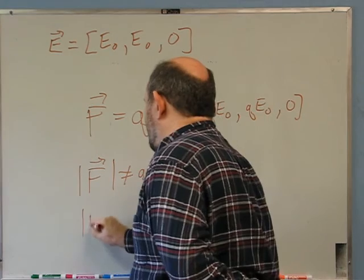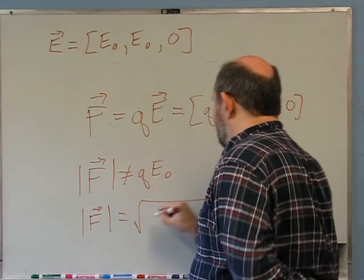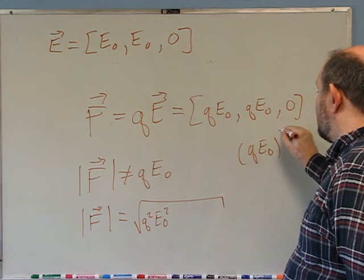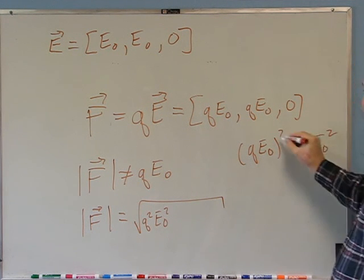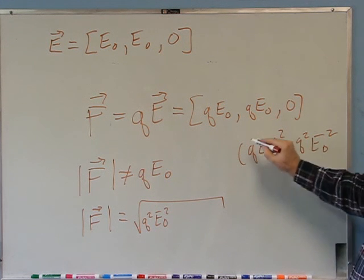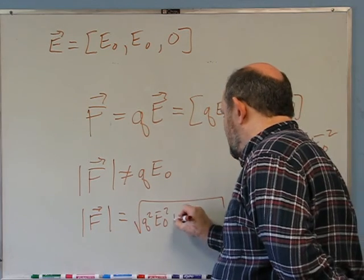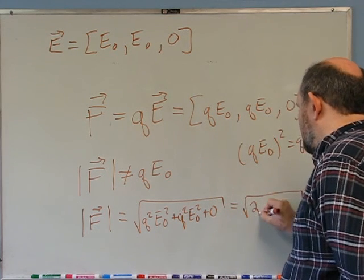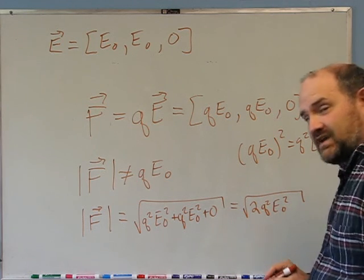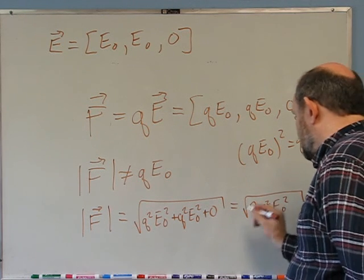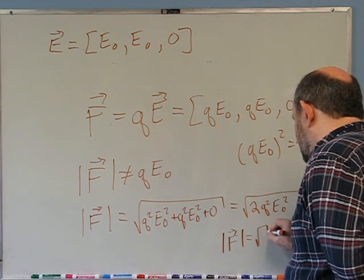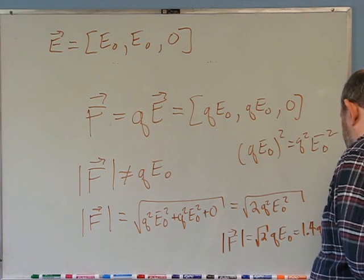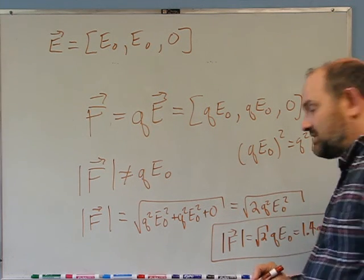The magnitude of the force is equal to the square root of Q²E0² plus Q²E0² plus zero. I take the X component and square it. If I have QE0 as the whole X component, that's how you distribute the square over products. So that's the X component squared plus the Y component squared, which is Q²E0² + Q²E0² + 0, the same as the square root of 2Q²E0². I can take Q and E0 out of the square root because they're both squared, giving the magnitude of the force equal to √2·QE0. Square root of two is 1.4 — that is the magnitude of the force.